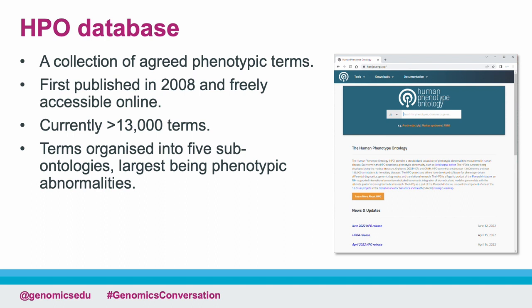Those five sub-ontologies are: mode of inheritance, clinical modifier, clinical course, frequency, and finally phenotypic abnormality. Phenotypic abnormality is the largest sub-ontology and is what we will focus on today. Each HPO term has a unique ID and label, which we will explore in a bit more detail later.